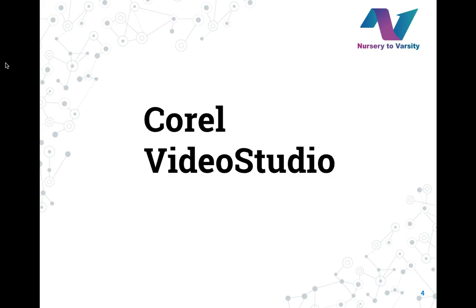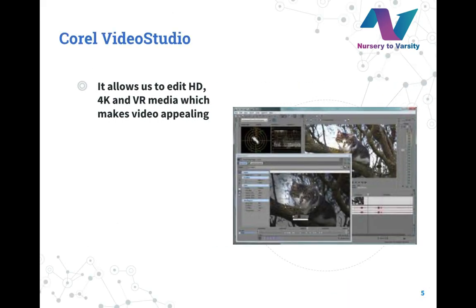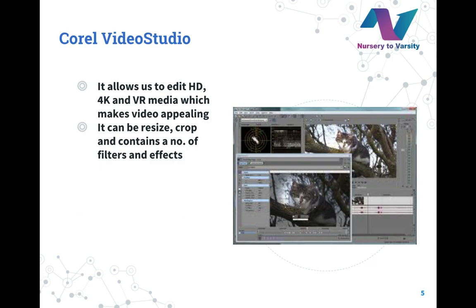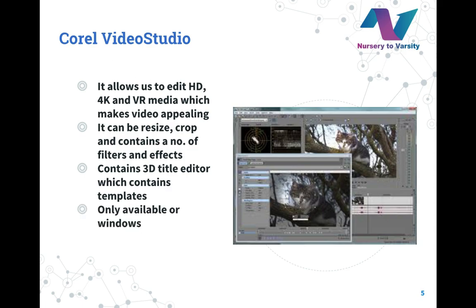Now moving on to our second software, Corel Video Studio. This is the software which consists of a 360 degree feature. 360 degree refers to an interactive video format which allows the user to change the viewing angle during playback. It also allows amplifying HD, 4K, and VR media which makes the videos even more attractive as these formats are readily used in video categories. This software is often used for resizing and cropping images, and also contains a various number of filters and effects which enhance images and videos and make them look very attractive. It also contains a 3D title editor which contains templates, makes titles more attractive, and applies various transitions. It is only available for Windows, so it is only accessible by Windows users.